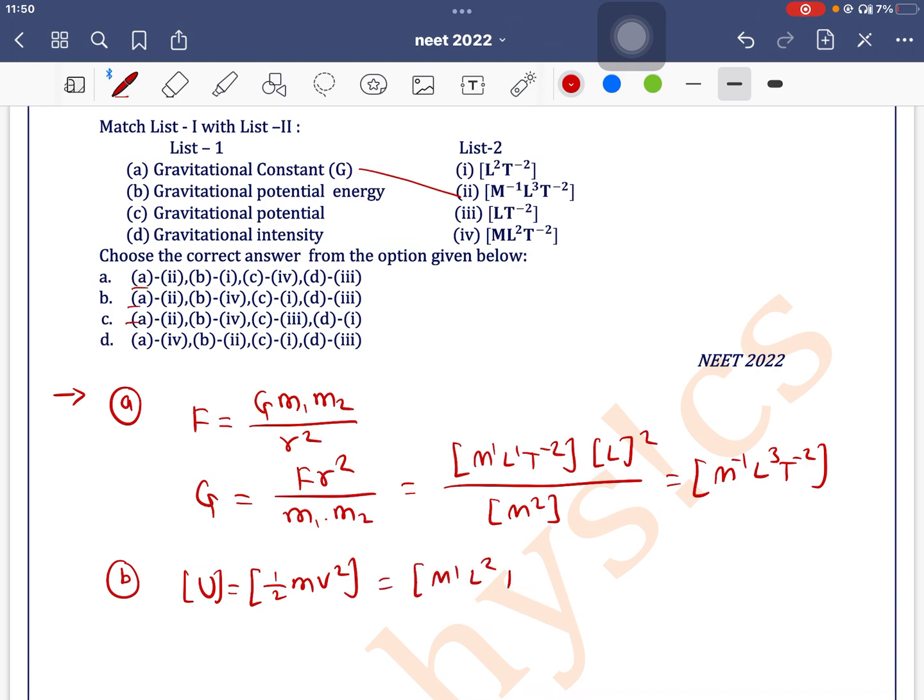M^1 L^2 T^-2. M^1 L^2 T^-2. For b, fourth one is correct one, b4.